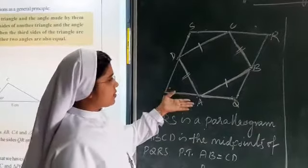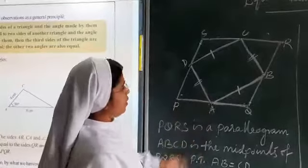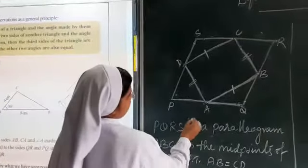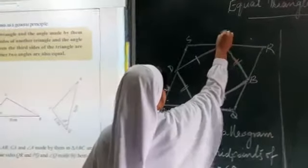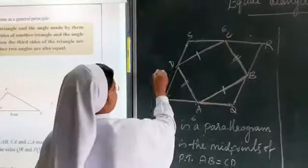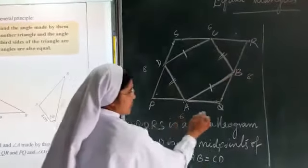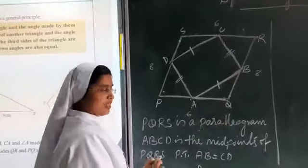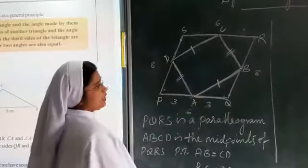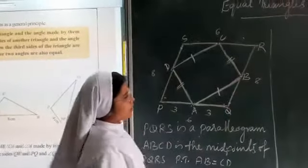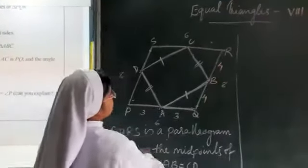Since there is no size given and no measurement or angle is given, we can assign PQRS as 6 centimetres — therefore RS will also be 6 centimetres because it is a parallelogram. And here we can give QR as 8 centimetres. If PQ is equal to 6 centimetres, PA equals 3 cm and AQ equals 3 cm. If QR equals 8 cm, QB equals 4 cm and BR equals 4 cm.